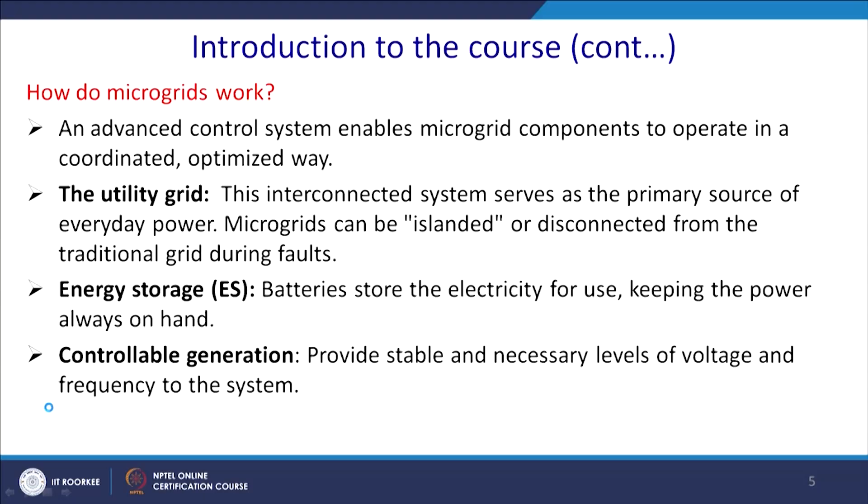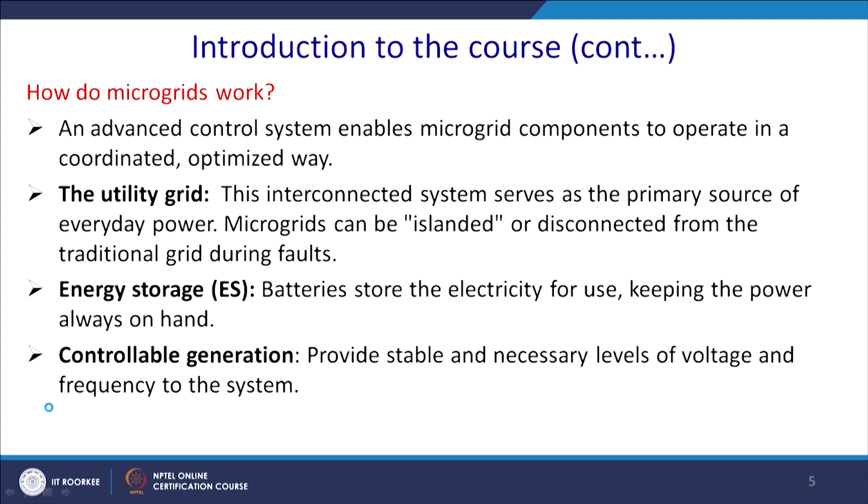The utility grid, the interconnected system, serves as the primary source of everyday power. A microgrid can be islanded or disconnected from the traditional grid during a fault. If there is a fault, you can cut your system from the traditional grid and operate with critical loads depending on available local power. Energy storage (ES) — most commonly a battery — stores electricity to keep power on hand, giving autonomy. For example, in a solar-based system, during 2 or 3 rainy days, you supply power from the storage battery. Storage power serves to meet these contingencies.